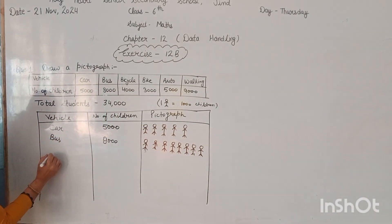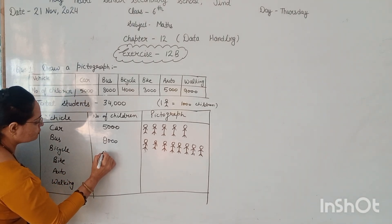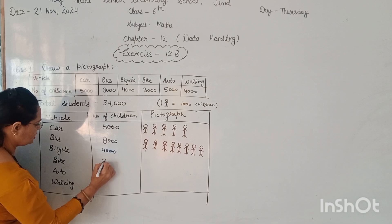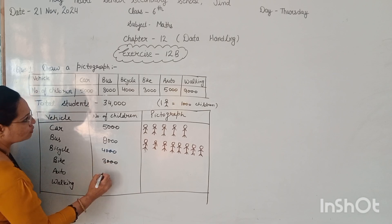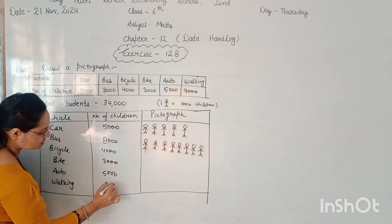Same thing, we have to complete this table. Here we have to write bicycle, then bike, then auto, and then walking. For bicycle, there are 4,000 children, for bike, 3,000 children, for auto, 5,000 children, and for walking, there are 9,000 children.